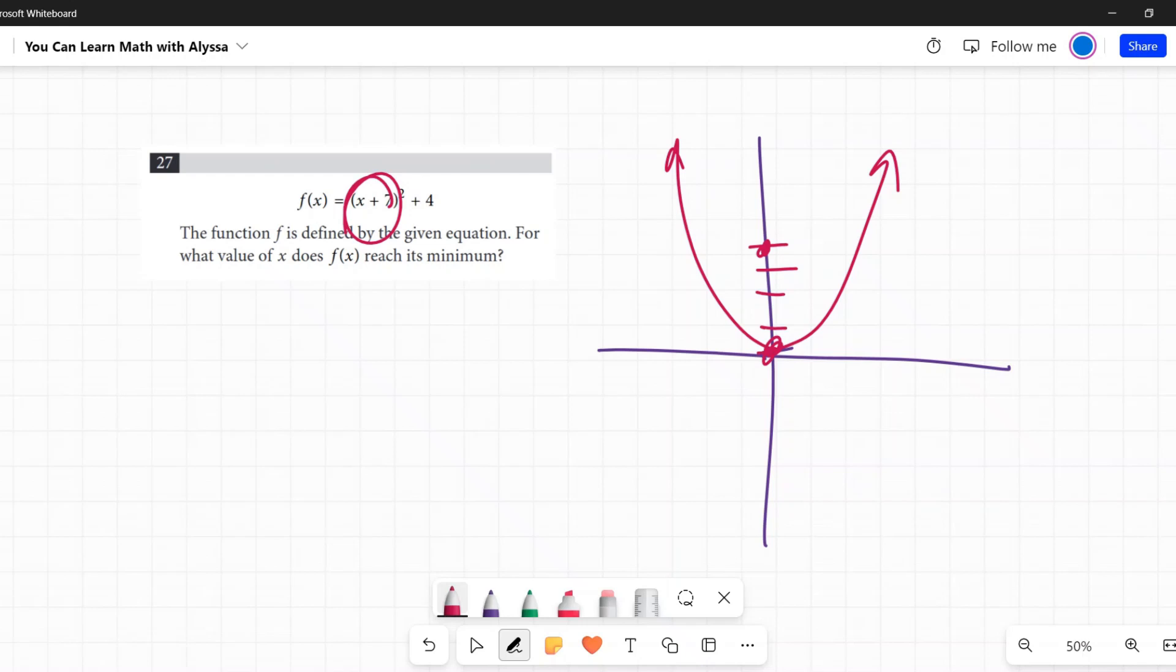And then that's positive 7 inside there with the x. The numbers inside the x, once again, move it left or right, but the opposite way. So this is a plus 7. It's going to move towards the negative side of the x.